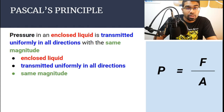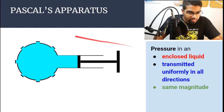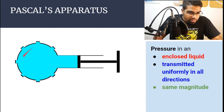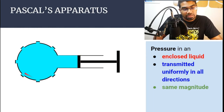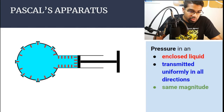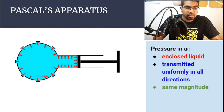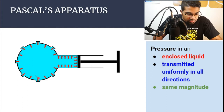Pascal's Principle can be demonstrated using Pascal's Apparatus. This thing over here is Pascal's Apparatus — this is a syringe, and this is a liquid enclosed inside it. When we apply a force and push the syringe, pressure is created inside this enclosed liquid and distributed uniformly in all directions. The pressure here is the same as the pressure everywhere — it has the same magnitude everywhere.